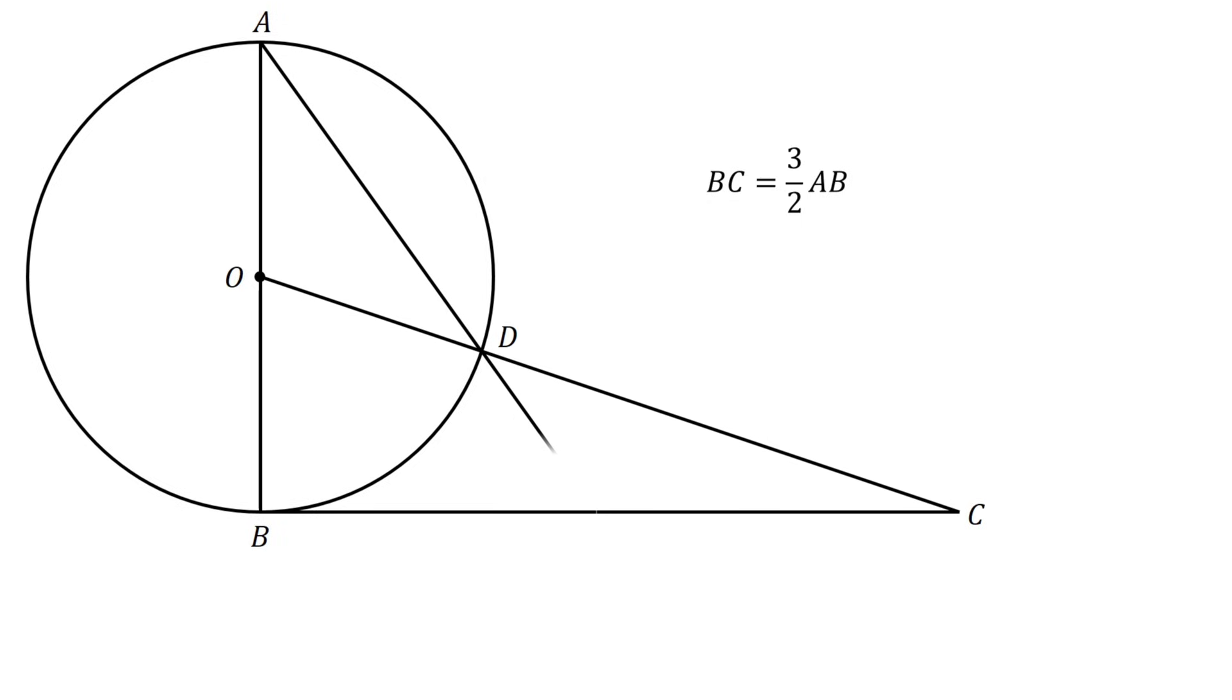Given a circle with center O, let AB be the diameter of the circle and BC be a tangent of the circle such that BC equals 3 over 2 AB. Connect O to C and label the intersection of OC and the circle as D. Connect A to D and extend AD to meet BC at E. Given that BE equals 6 units, find the radius of the circle.